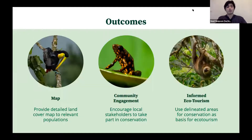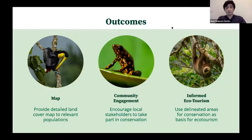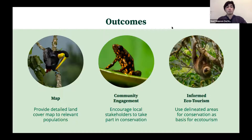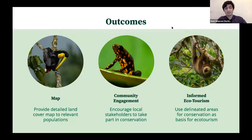The outcomes of this project will be: one, a cohesive map that provides detailed land cover to communicate to all the relevant populations and groups in this project. Two, increased community engagement by having this map and this information in the public sphere. We hope to encourage local stakeholders to take part in conservation as well as understand how on their own land they can contribute to local biodiversity conservation.